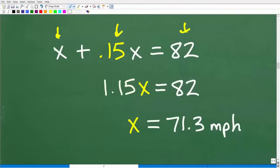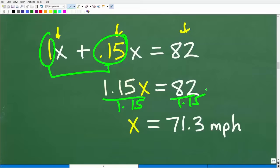Now here, we need to be clear that there is a coefficient. This is X or 1X. So we have like terms. So we're going to add 1 and 0.15. So 1 plus 0.15 gives us 1.15X. It's equal to 82. And to solve this basic equation, all we have to do is divide both sides of the equation by 1.15. And of course, use your calculator. So 82 divided by 1.15, we get X is equal to 71.3 miles per hour.